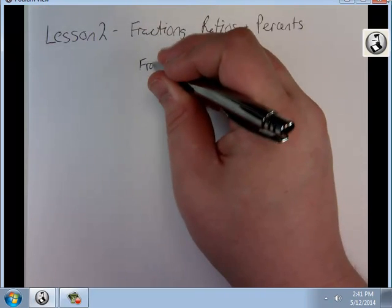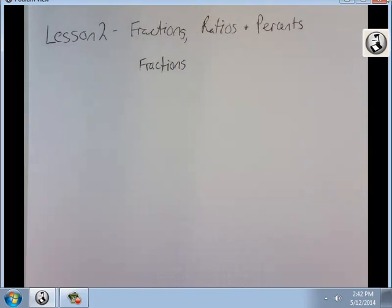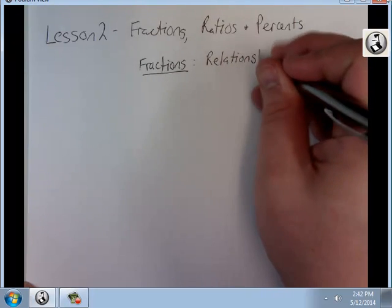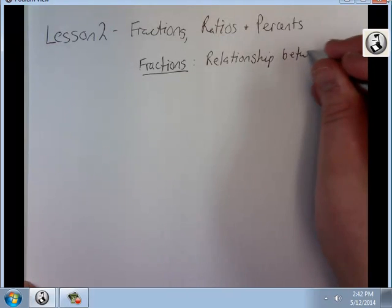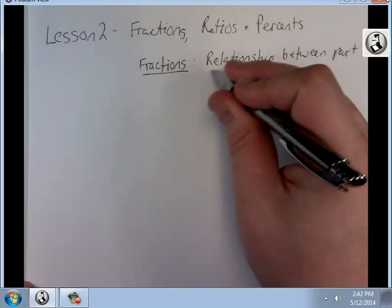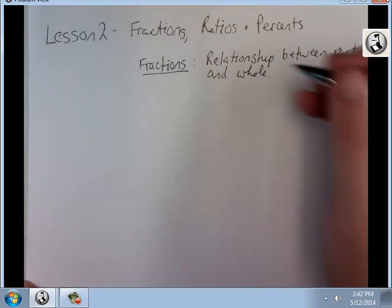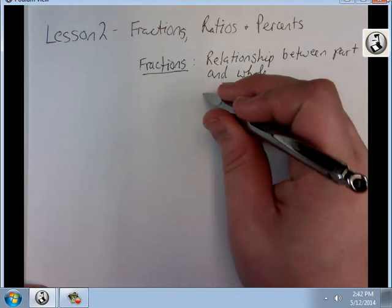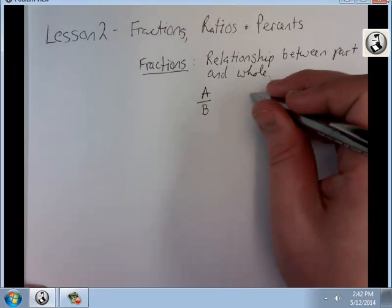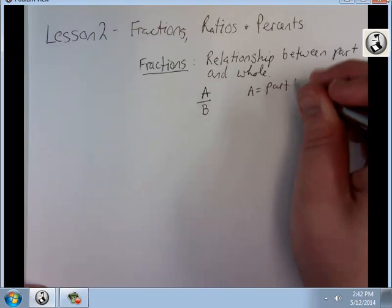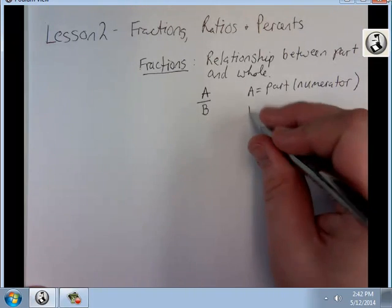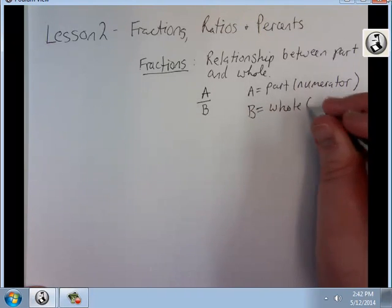So we're going to start with fractions. What exactly is a fraction? A fraction is a relationship between part and whole. Usually we write them, of course, A over B. A is the part, which we call the numerator. B is the whole, which we call the denominator.